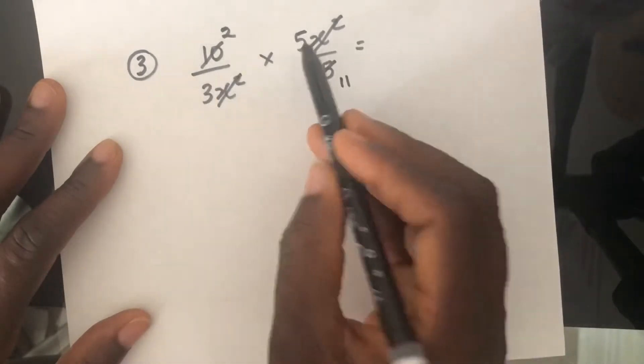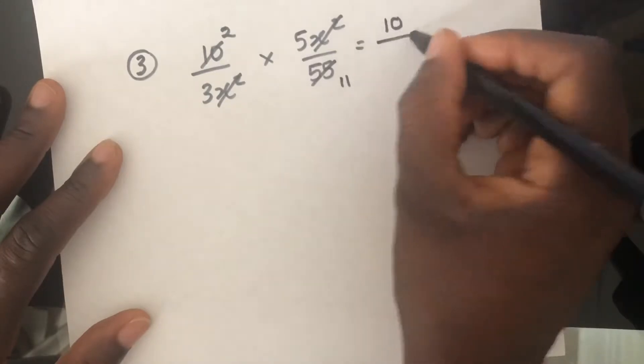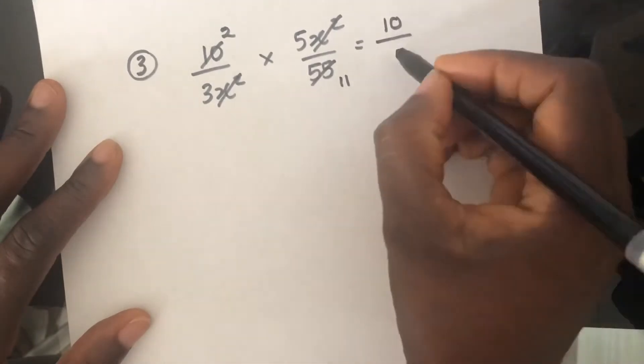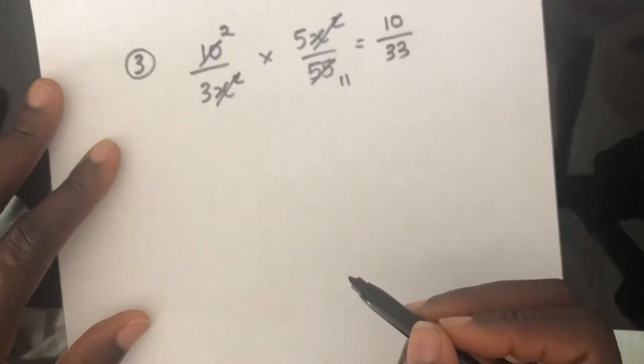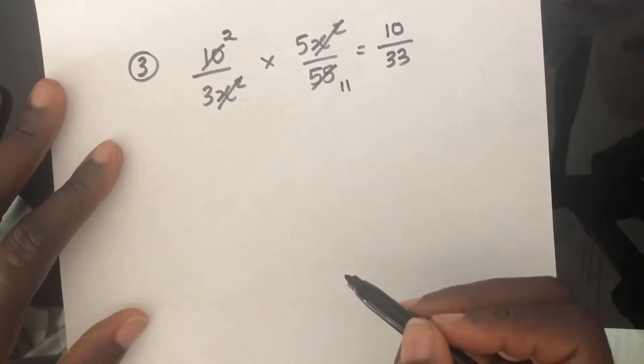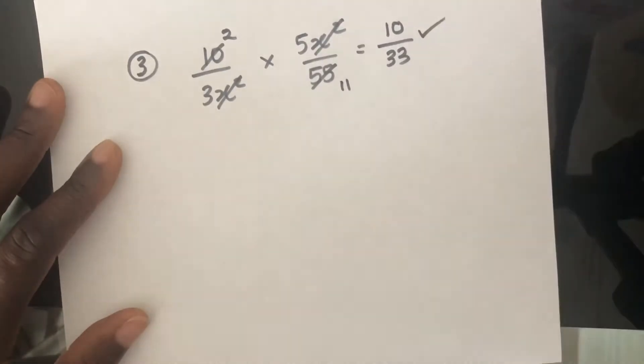Now what's left is 2 times 5 on the top. So I'm going to have 2 times 5, which is 10 over 3 times 11, which is 33. Can anything else be simplified any further? No. So, and that would be the answer in simplified form.